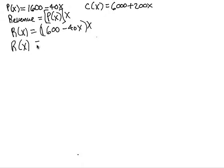If we multiply that out, we're going to have 1600x minus 40x squared.